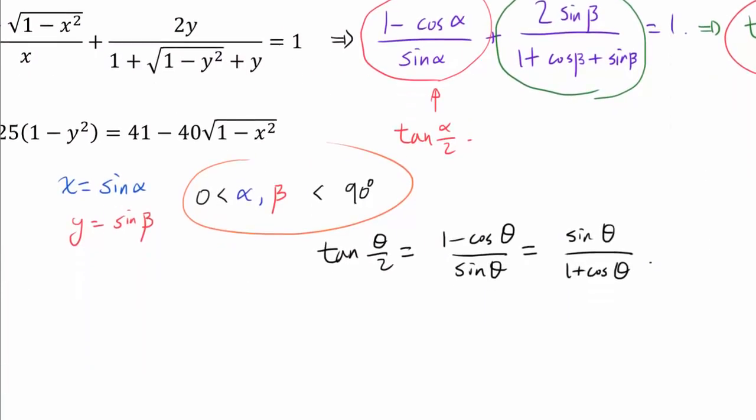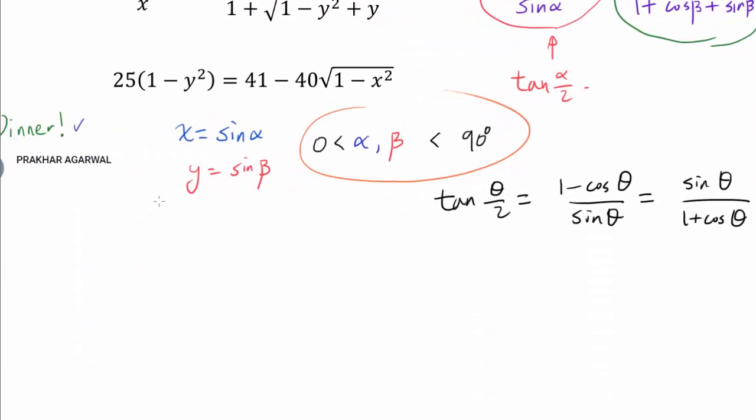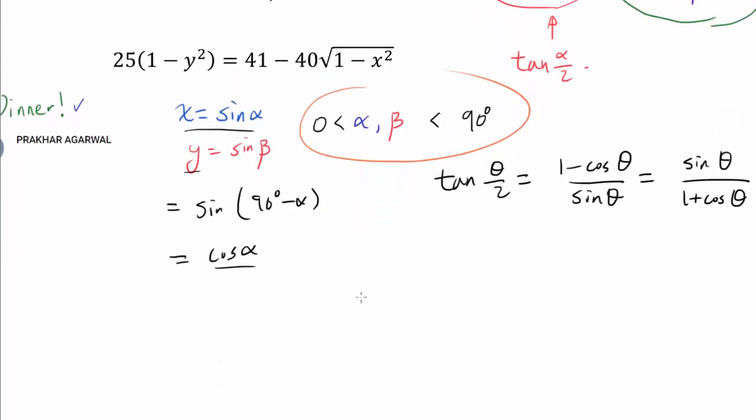Because if alpha and beta are complementary, that's telling us that y is sine of 90 minus alpha or cosine of alpha. So we know x is sine of alpha, y is cosine of alpha. So we have found from the first expression that x squared plus y squared is 1. And once we know this, finishing up the problem is very easy.